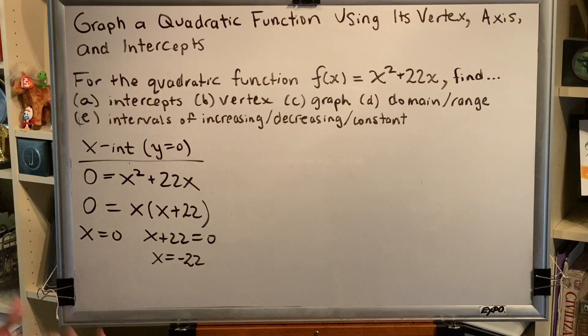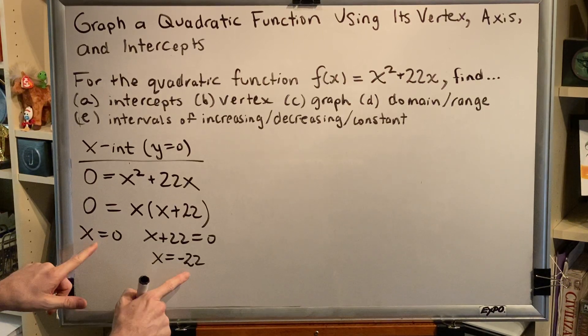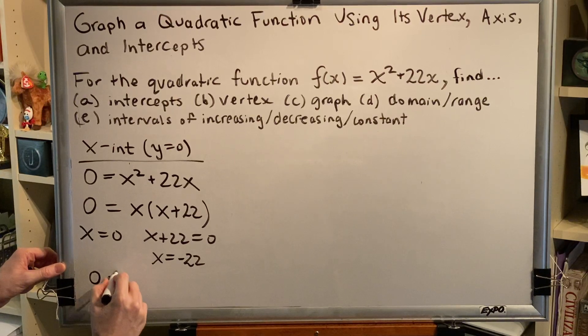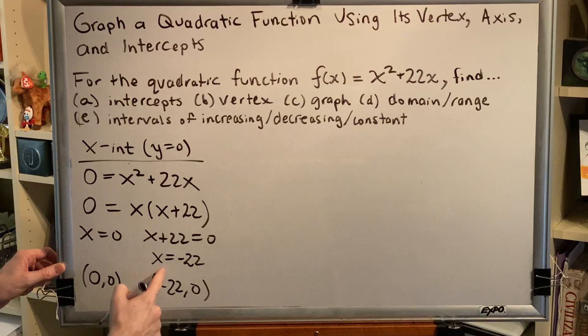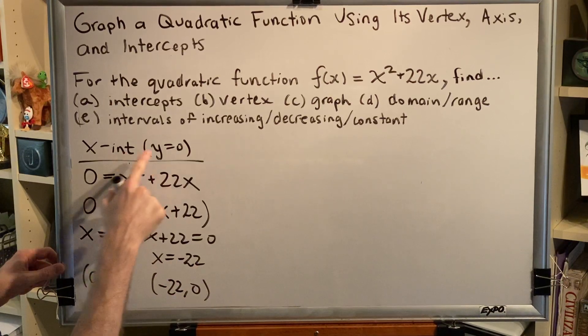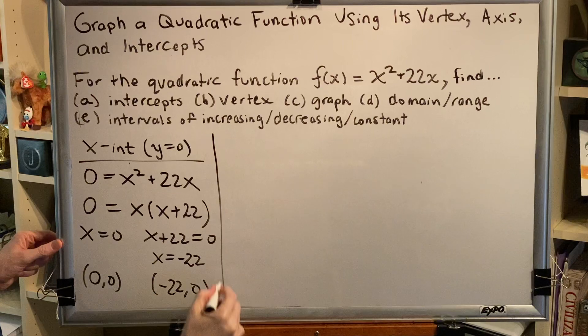Now remember these are intercepts, points, ordered pairs. For each x, there's a y. So this is the point (0, 0), and this is the point (-22, 0). x is -22, f(x) or y is zero. All right, we now move on to the y-intercept.